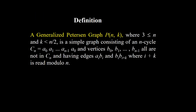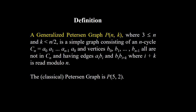A generalized Petersen graph, denoted by P(n,k) where 3 ≤ n and k < n/2, is a simple graph consisting of an n-cycle C_n = a0, a1, ..., a(n−1), a0; n vertices b0, b1, ..., b(n−1) not in C_n; and having edges a_i b_i and b_i b_(i+k), where i+k is read as modulo n. The Petersen graph, also called the classical Petersen graph, is P(5,2).